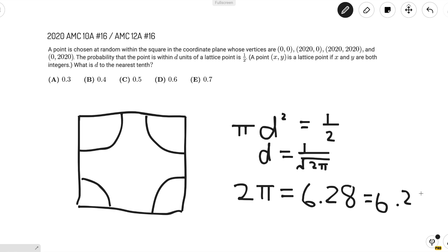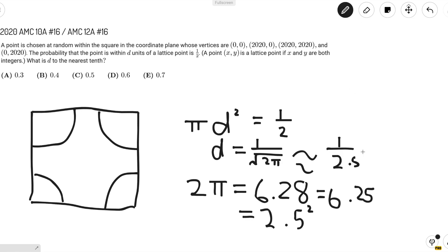And the nice thing about 6.25 is that it equals 2.5². So that means d is roughly equal to 1/2.5, which is just 0.4. And we're in luck here, because d is less than 1/2.